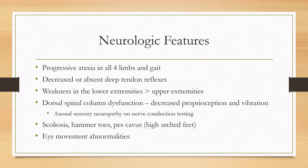There will be more weakness in the lower extremities — the feet and the legs — than the upper extremities. Most patients will also have decreased proprioception and vibration since this disease affects the dorsal columns. If nerve conduction testing is done, it will show axonal sensory neuropathy. You can also see bone abnormalities such as scoliosis, hammer toes, and pes cavus, or high arched feet.